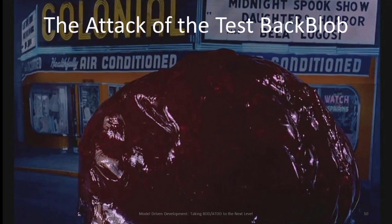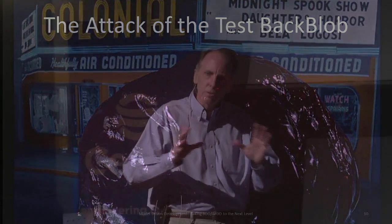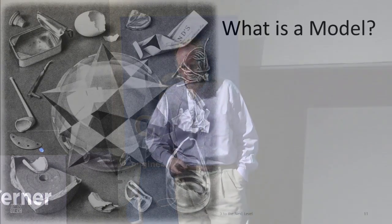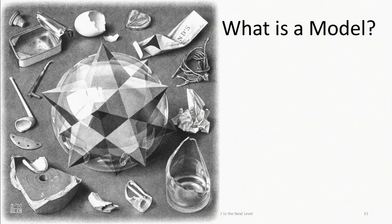So to recap, I've tried to dramatize two essential problems in testing. One: there are a lot of things to test, and we don't know which tests will serve their purpose of finding bugs. So we tend to write more and more tests, but then we have the problem that we have lots of tests. How can we deal with that? Let's now switch gears and talk about modeling.